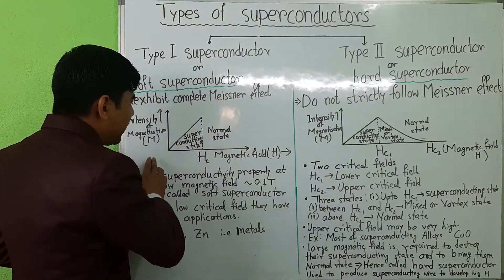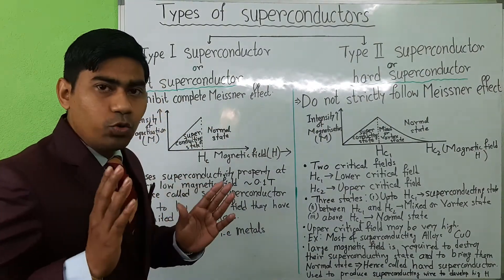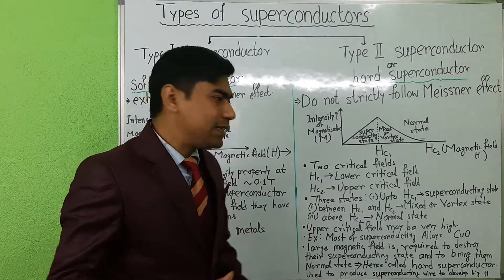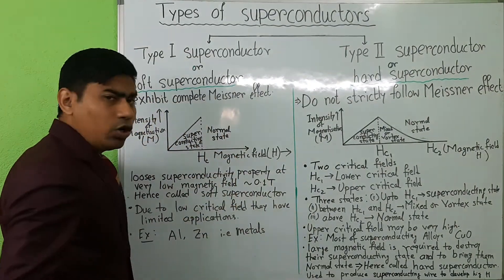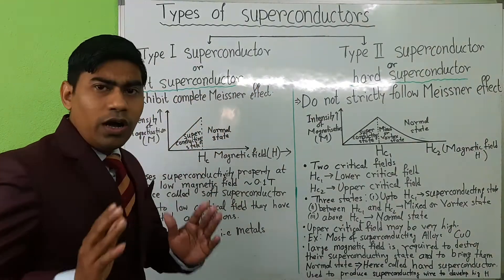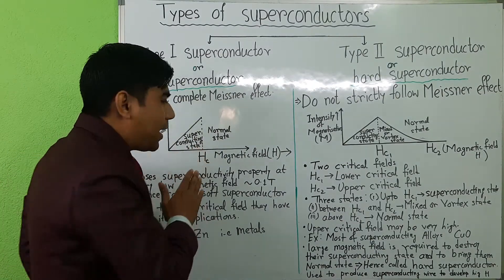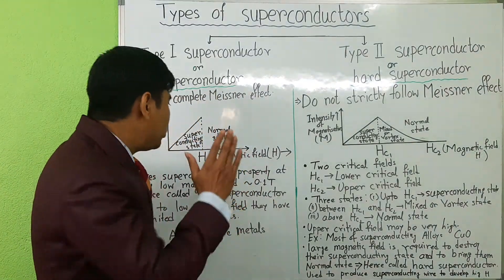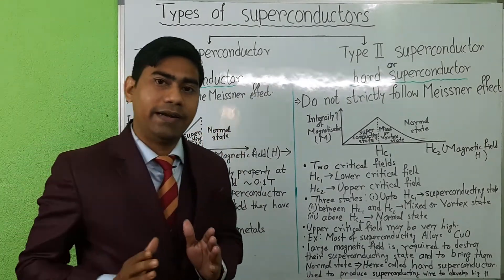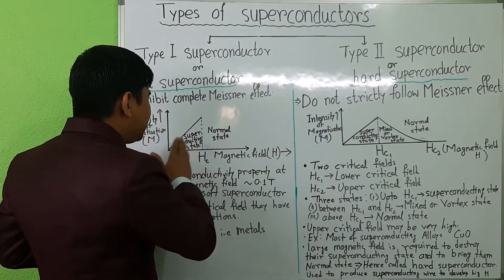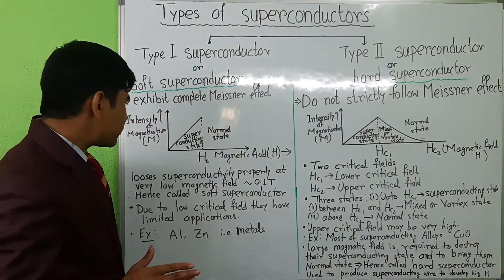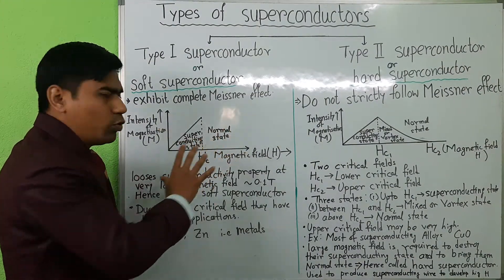Up to the critical field Hc, this type of superconductor is in the superconducting state, and after that it abruptly changes to the normal state. So this is the superconducting state and this is the normal state. Up to the critical field Hc, magnetic flux does not penetrate into the superconductor, and after Hc, magnetic flux penetrates into the superconductor. So up to Hc, this type of superconductor follows the Meissner effect strictly.